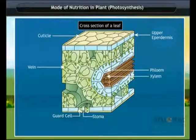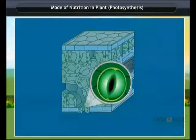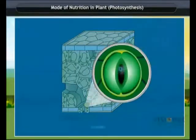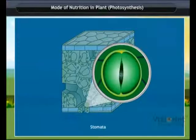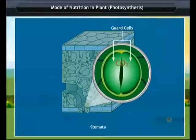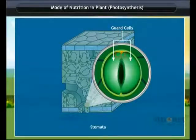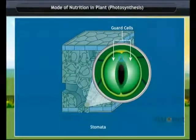The surface of the leaf has minute pores called stomata. These pores are surrounded by guard cells. Carbon dioxide gas is taken from air through the tiny pores present on the surface of the leaves.